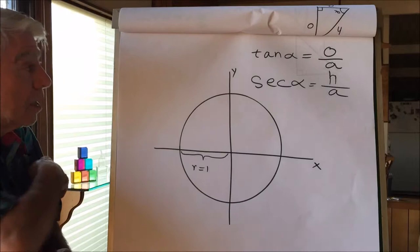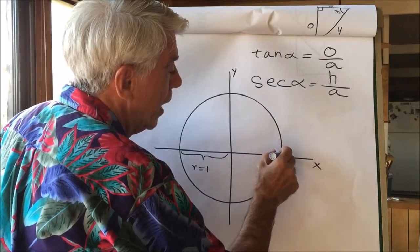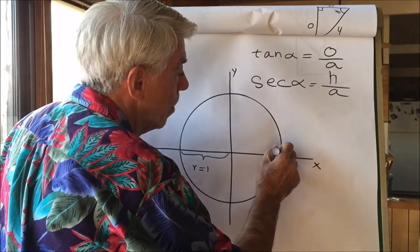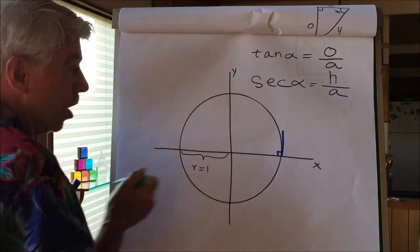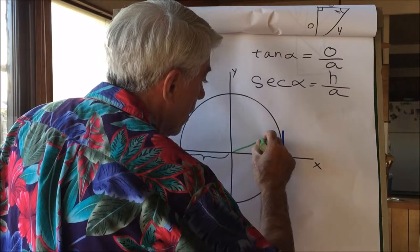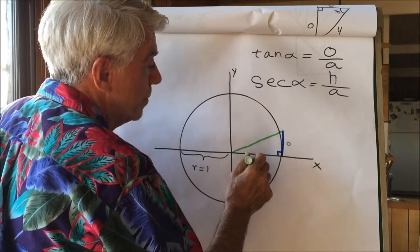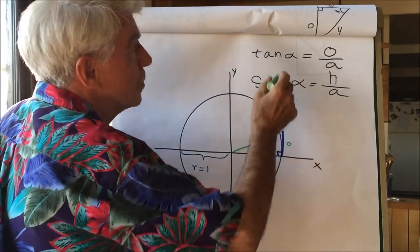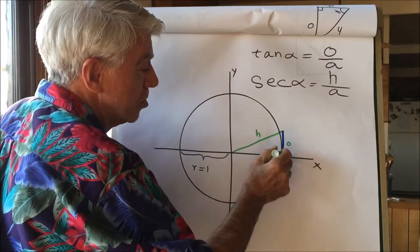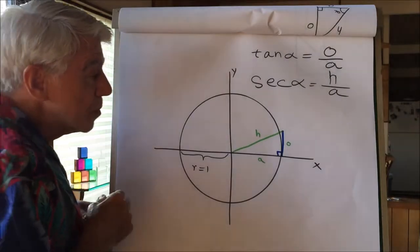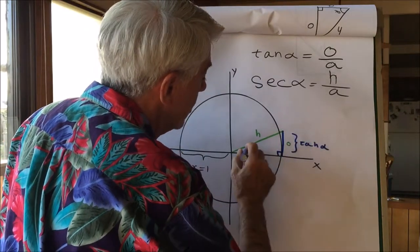Let's start with the tangent, which is the opposite over the adjacent. If we make this the adjacent by putting our right angle right here and draw the hypotenuse of this right triangle — this is the opposite, this is the adjacent, this is the hypotenuse — tangent is the opposite divided by the adjacent. The adjacent is 1, so it has no effect. The distance from here to here is the tangent of alpha, where this is alpha.